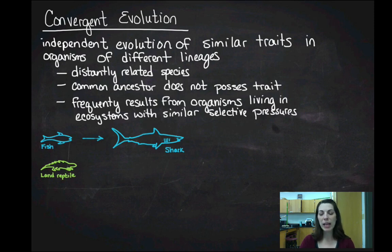And the land reptiles, we know, evolved into one of the land reptiles, evolved into the ichthyosaur, which is a dinosaur that went extinct about 65 million years ago. But we do know that that came out of a reptilian-like lineage. And if you look at the shape between the ichthyosaur and the shark, they are very similar. They're both very hydrodynamic and torpedo-shaped.